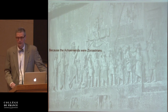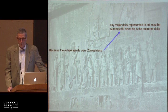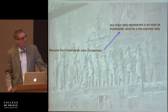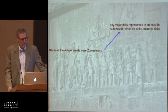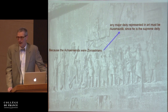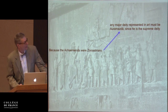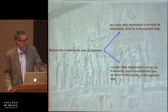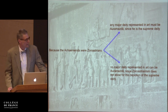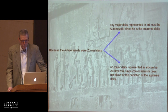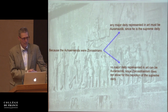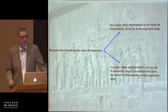Because the Achaemenids were Zoroastrian, that leads to the inference that any major deity, such as the winged symbol represented in art, must be Ahura Mazda, since Ahura Mazda is the supreme deity as witnessed by the Achaemenid imperial inscriptions. At the same time, because the Achaemenids were Zoroastrian, no major deity represented in art can be Ahura Mazda, since Zoroastrianism does not allow for the depiction of the supreme deity. From a methodological perspective, this is an unhealthy place to be, where everyone applies the same premise to the same data but gets polar opposite results.